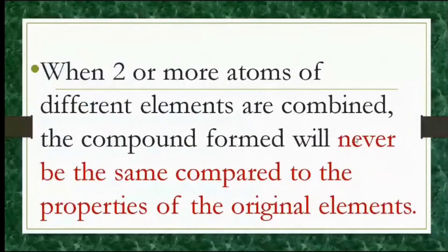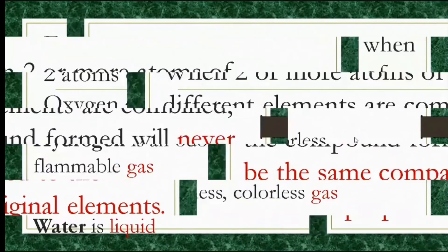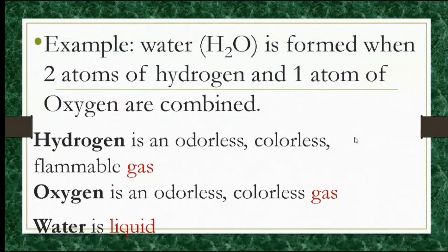When two or more atoms of different elements are combined, the compound formed will never be the same compared to the properties of the original elements. Example, water is formed when two atoms of hydrogen and one atom of oxygen are combined. Hydrogen is an odorless colorless flammable gas. Oxygen is an odorless colorless gas. When hydrogen and oxygen are combined, the compound formed, which is water, is a liquid, which is different from both the hydrogen and oxygen.